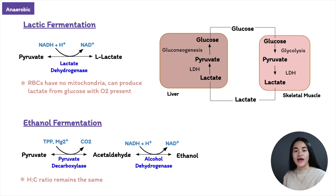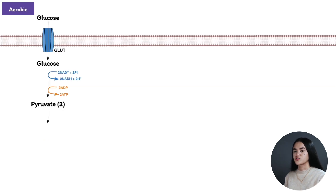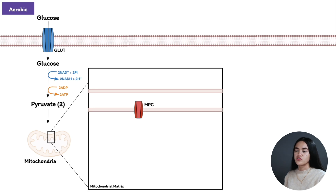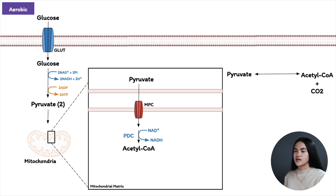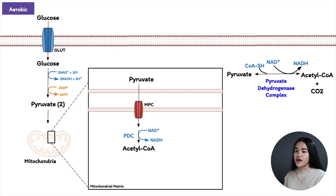Now let's take a closer look at what happens to pyruvate under aerobic conditions, when oxygen is present. The pyruvate produced in the cytosol is transported to the mitochondria — it goes through a large opening in the outer mitochondrial membrane and is transported across the inner membrane by a specific passive transporter called the mitochondrial pyruvate carrier, or MPC. In the matrix, it is oxidized to acetyl-CoA and carbon dioxide by the pyruvate dehydrogenase complex. The pyruvate dehydrogenase complex requires five coenzymes: thiamine pyrophosphate, FAD, coenzyme A, NAD+, and lipoate.